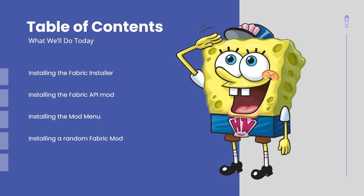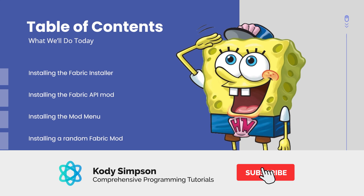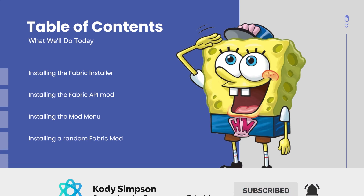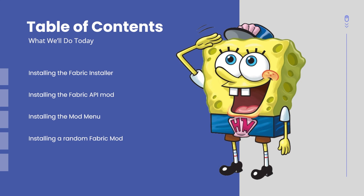The first thing we'll be doing is installing and using the Fabric installer so that you can start using mods on your computer. The next thing is installing the Fabric API mod, which is helpful for mods that require the Fabric API to run. Then we'll install the Mod Menu, which is a mod that enables you to see all the mods installed on your game currently, which is very helpful. And the last thing we'll do is install a fun random Fabric mod so we can see what mods can do on our computer.